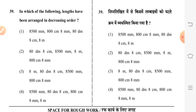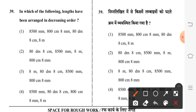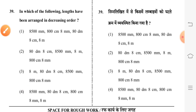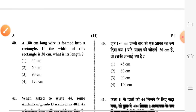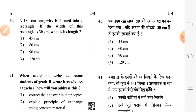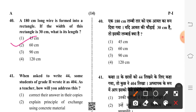Question 39: which of the following lengths have been arranged in decreasing order? Fourth option is correct. Question 40: a 180-centimeter-long wire is formed into a rectangle. If the width of this rectangle is 30 centimeters, what is its length? Second option is correct: 60 centimeters.